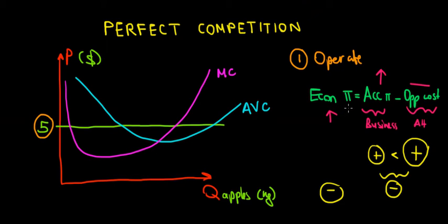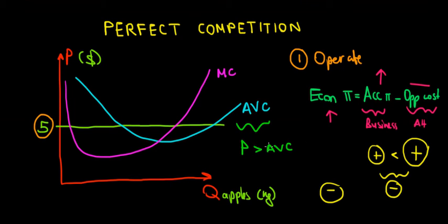Now we have this condition for the market: if we want to operate we must compensate the average variable cost. The criteria is that price must be greater than the average variable cost — not greater than or equal to. When price is greater than average variable cost we are recovering our variable costs, but recall that we also have fixed costs.